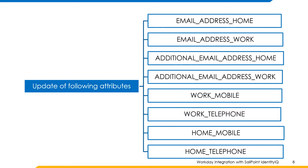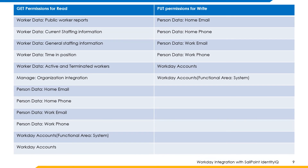For example, if you want to add an email address work from SailPoint Identity to Workday, then there will be certain put permissions that need to be granted to the email address work attribute. Here are a few get and put permissions that need to be provided in the Workday application. Get permissions for read are the permissions needed in Workday to read the attribute values.